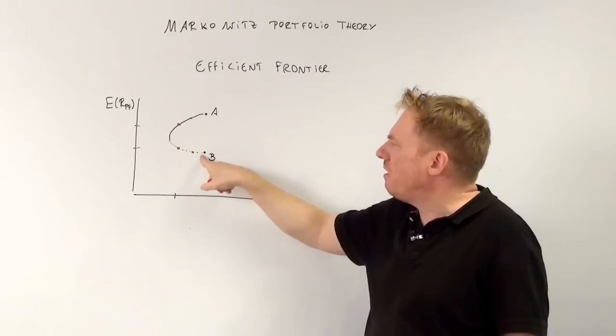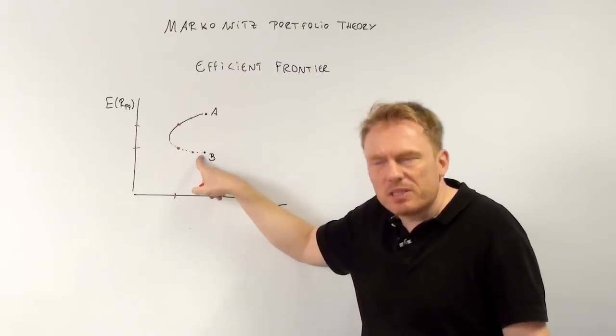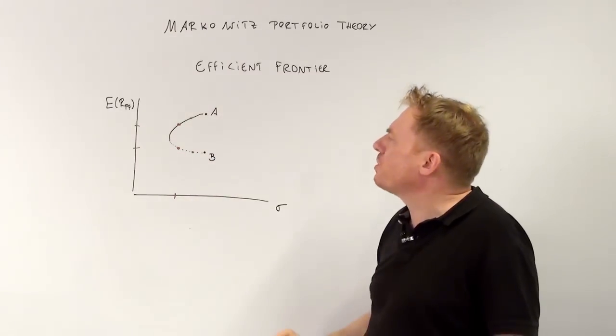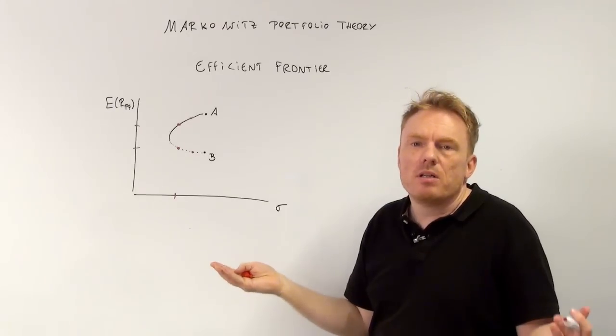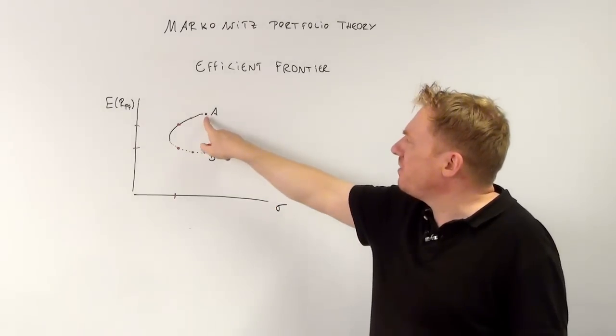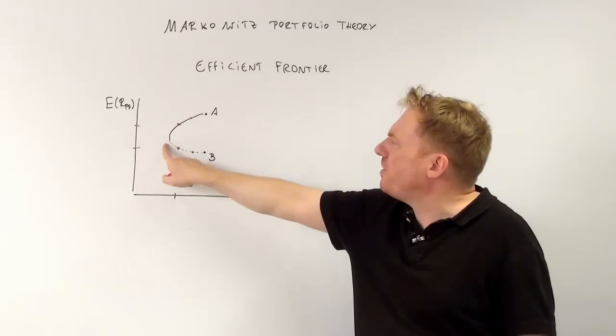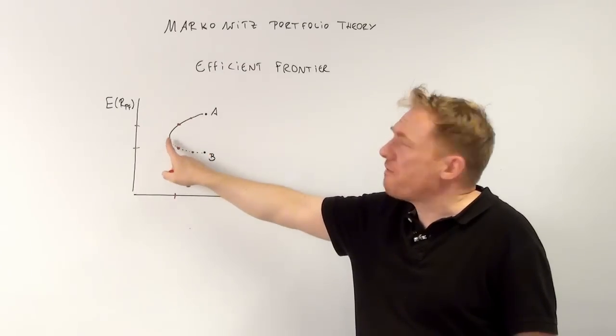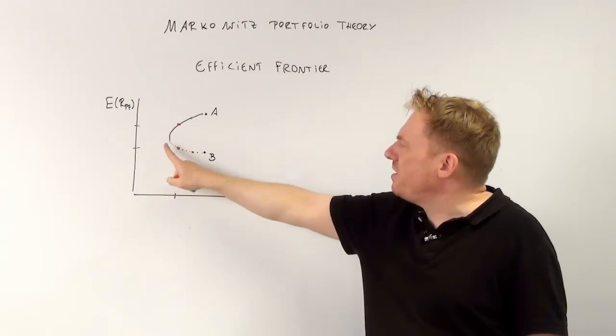These combinations are strictly inferior to those combinations, which means we can skip it. Talking about efficient frontier is only from here to there. This line is the efficient frontier, whereas this is not.